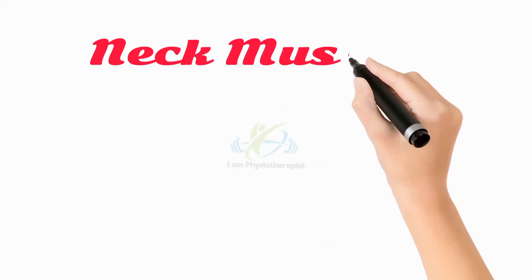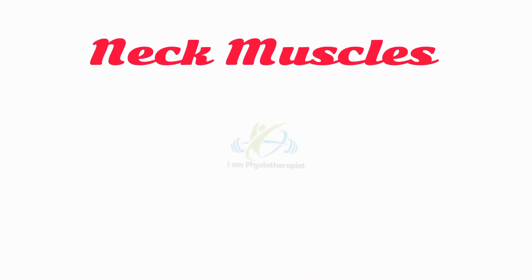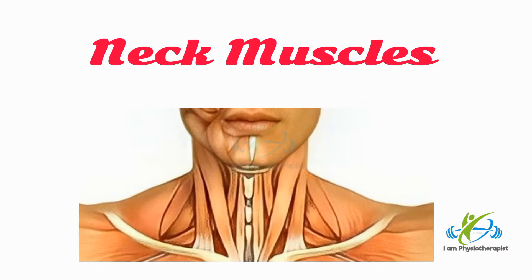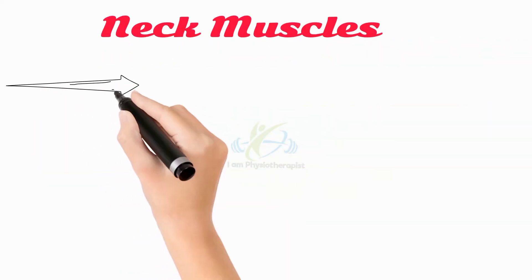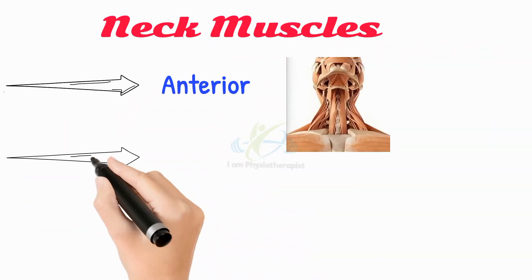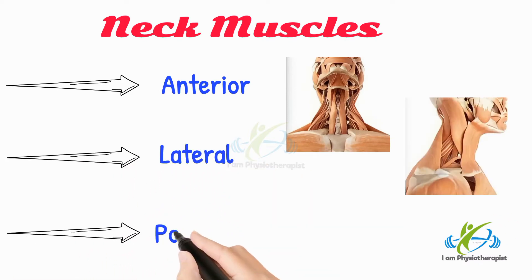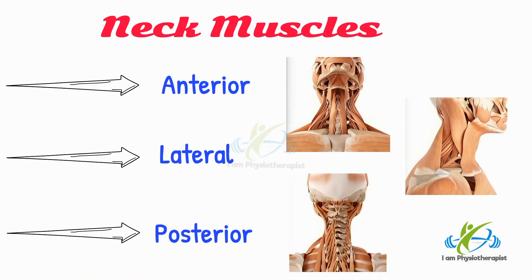Anatomy of neck muscles. The muscles that cover the area of the neck are mainly responsible for the movement of the head in all directions. Based on their position in the neck, they consist of three main groups: anterior, lateral, and posterior groups.